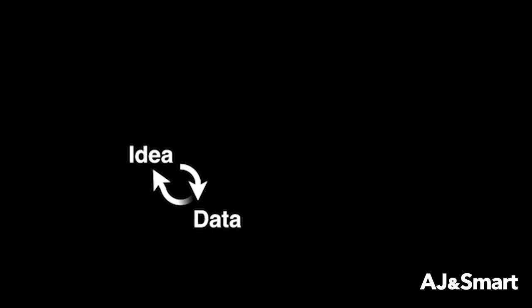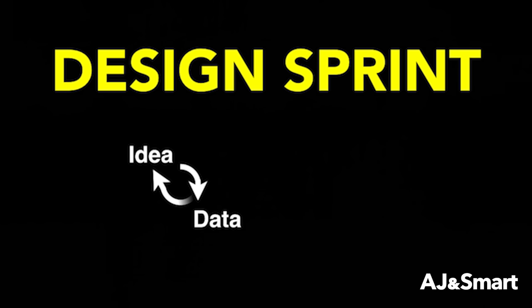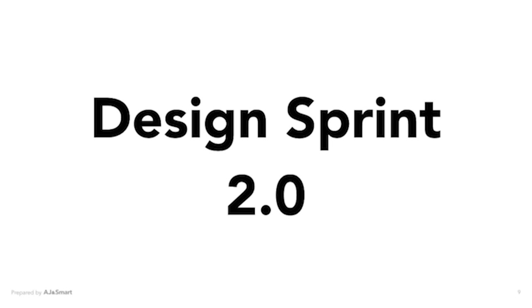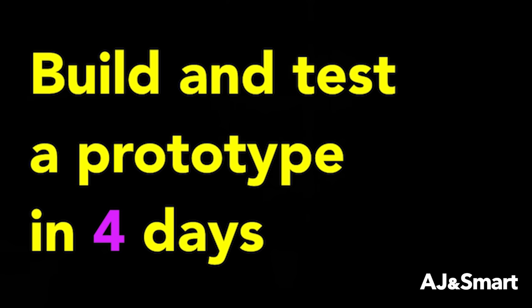Closing this loop and making it a lot smaller — validating and getting data on a product or idea before spending all this time — is really what the Design Sprint is all about. And the Design Sprint 2.0, which is what we're going to be teaching, does all of this in four days instead of the original five from the book, which we've developed with Jake as well.